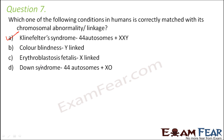Erythroblastosis fetalis is a disorder which happens due to maternal and fetal blood group incompatibility. This basically arises due to RH factor issues — RH positive and RH negative. If there is some kind of incompatibility between the maternal and the fetal blood group, then this disease happens. So this is not an X-linked disorder.